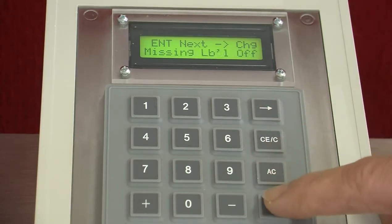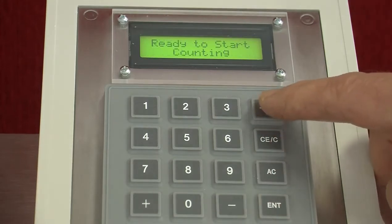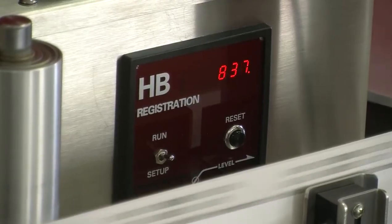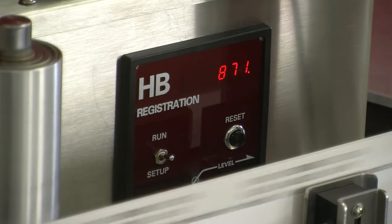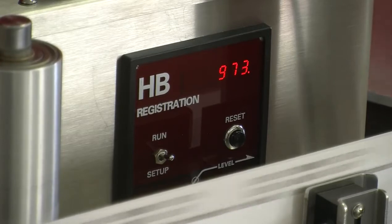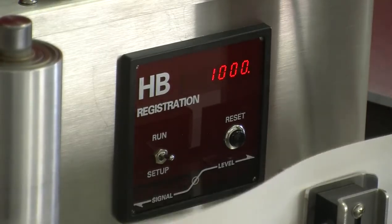Whether selecting the constant speed option or establishing a computer connection, the instructions are easy to follow. Your machine can be configured to identify missing labels or splices in the web itself. It can be set up to stop when it finds such an error so that the operator can take necessary action.